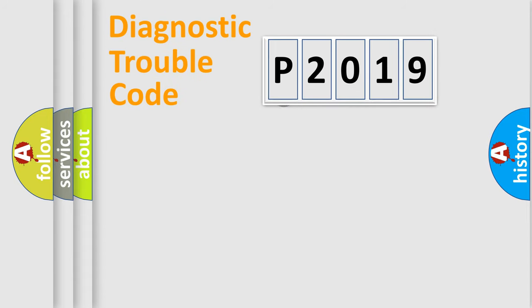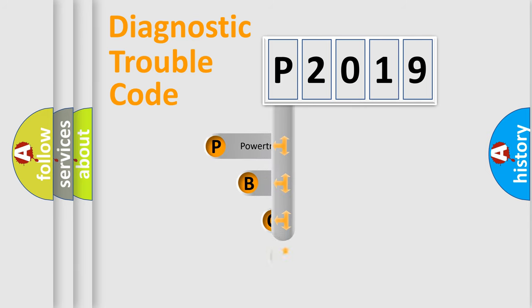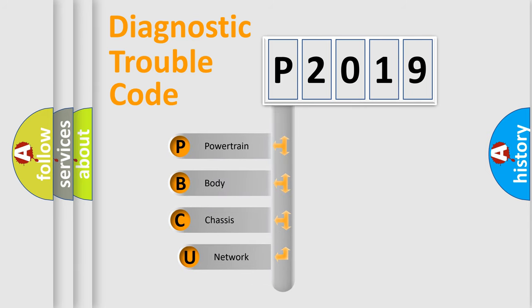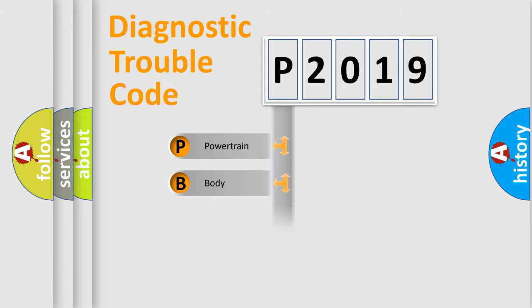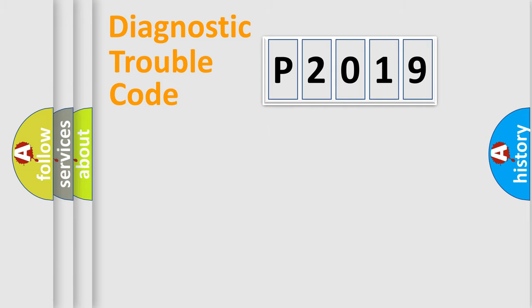Let's look at the history of diagnostic fault code composition according to the OBD2 protocol, which is unified for all automakers since 2000. We divide the electric system of an automobile into four basic units: Powertrain, Body, Chassis, and Network.